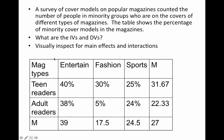We have magazine types: entertainment, fashion, sports, and their means. Then we have readers: teen readers and adult readers. People aren't assigned to condition here — we're just looking at different kinds of magazines and looking at the percentage of people who are minorities on the front page. For teen readers: entertainment is 40%, fashion 30%, sports 25%. For adults: entertainment 38%, fashion 5%, and sports 24%.